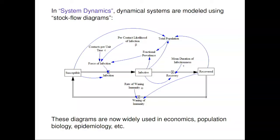In a simple model of disease, the flow rate of infection is equal to the number of susceptible people times a number called the force of infection. The force of infection is the number of contacts per unit time that a person has, times the per-contact likelihood of infection when they meet an infected person, times the fraction of people who are infected. So you multiply those three variables to get the force of infection.